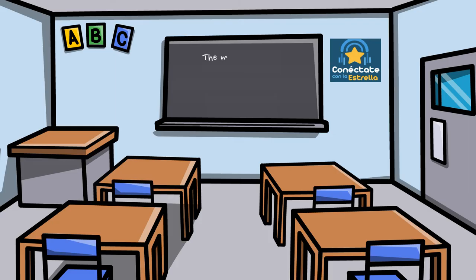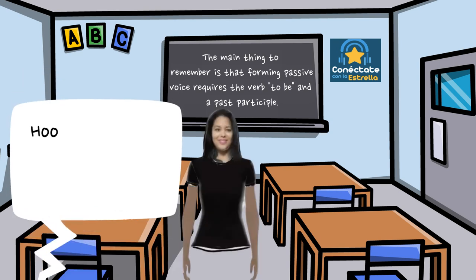As a conclusion, the main thing to remember is that forming passive voice requires the use of the verb to be, and a past participle form of the verb. Alright! Now you are ready to put it into practice.